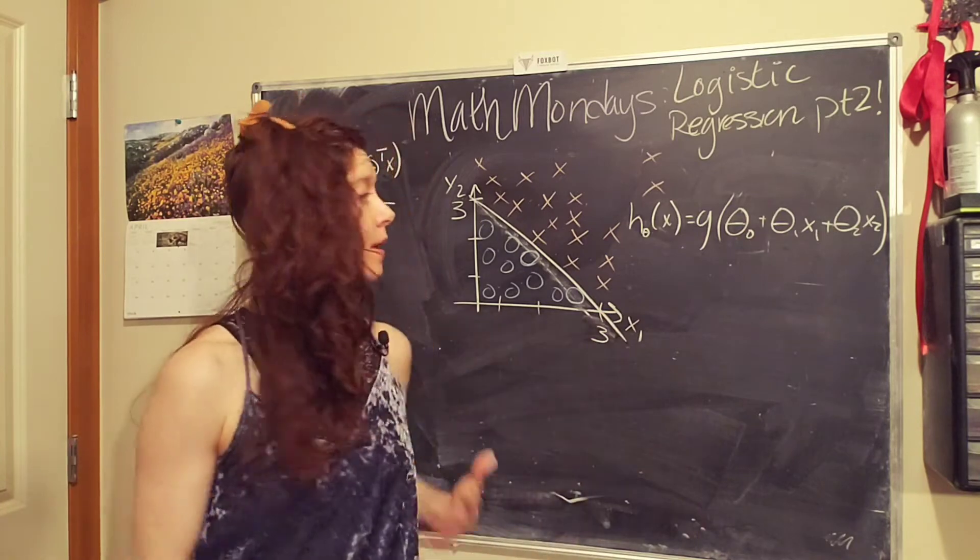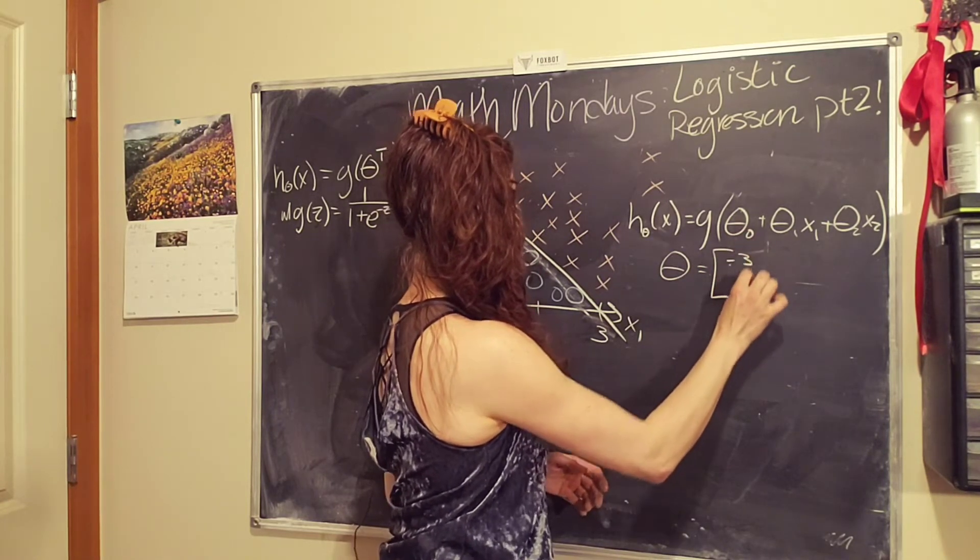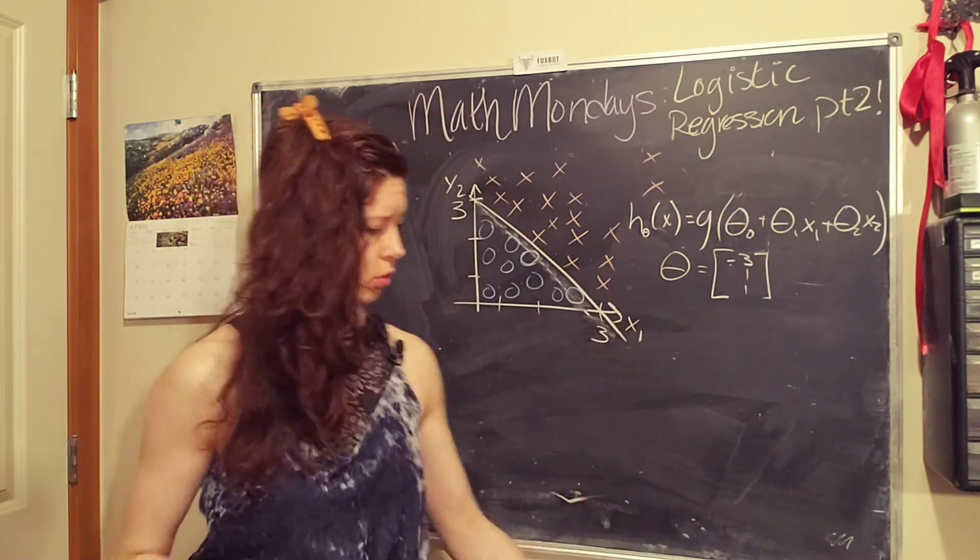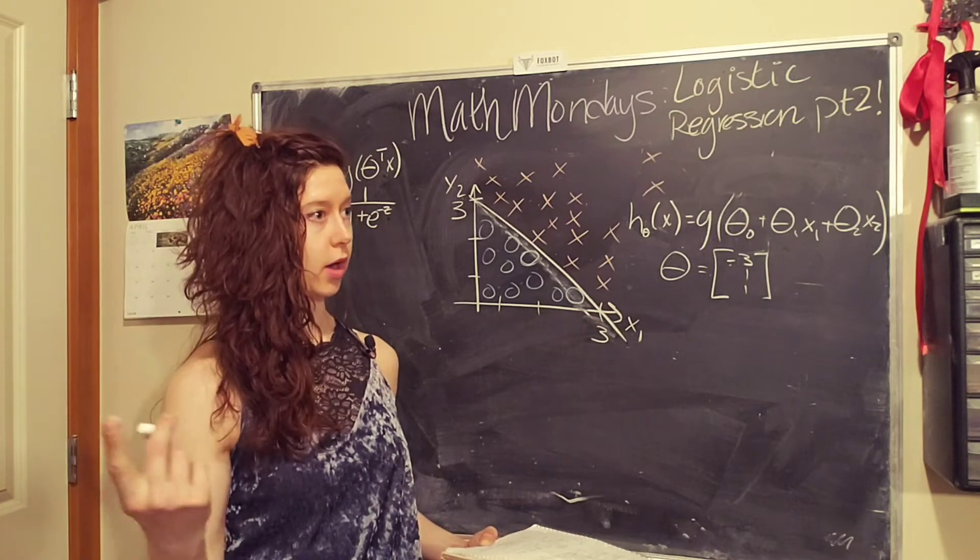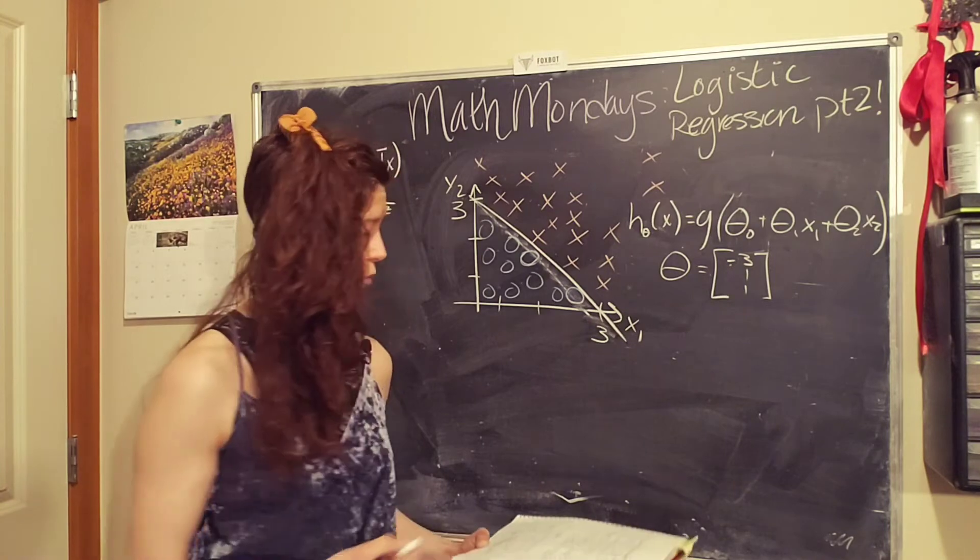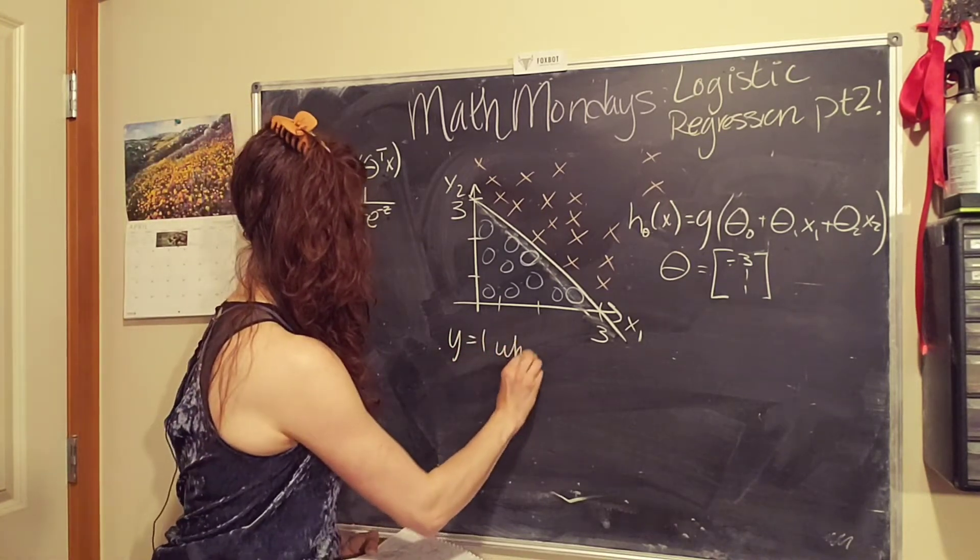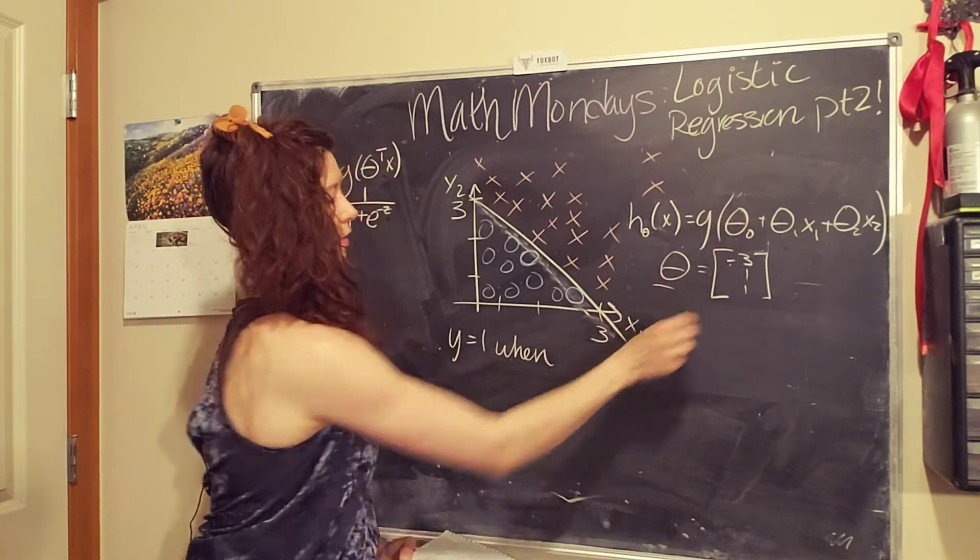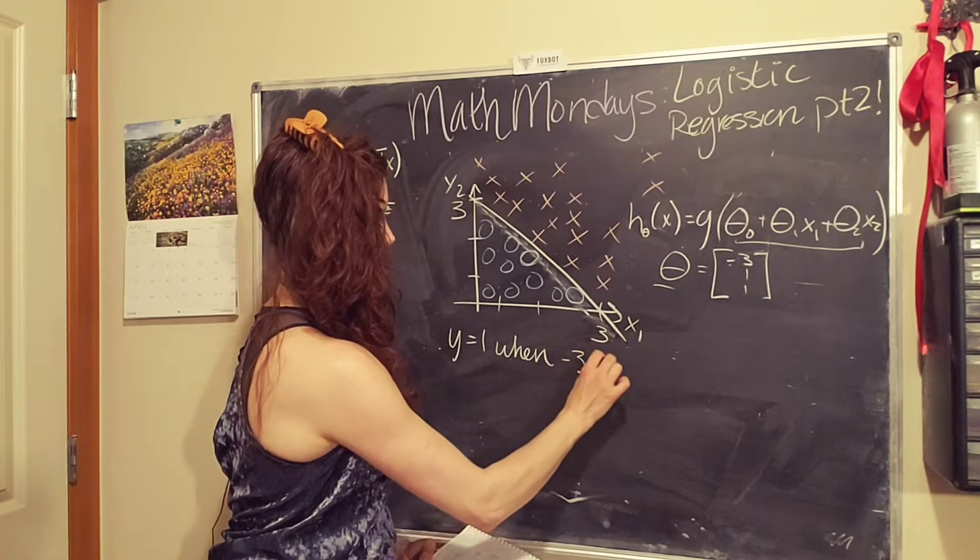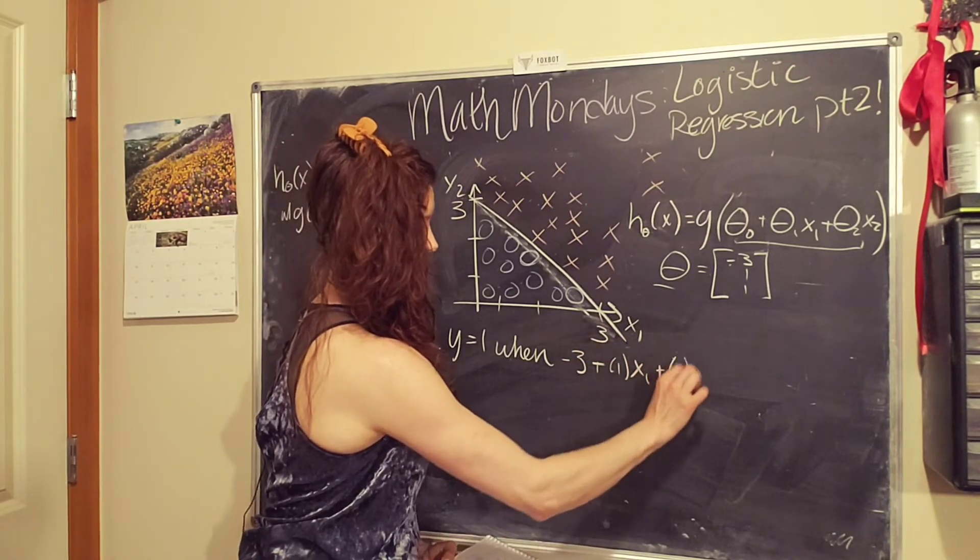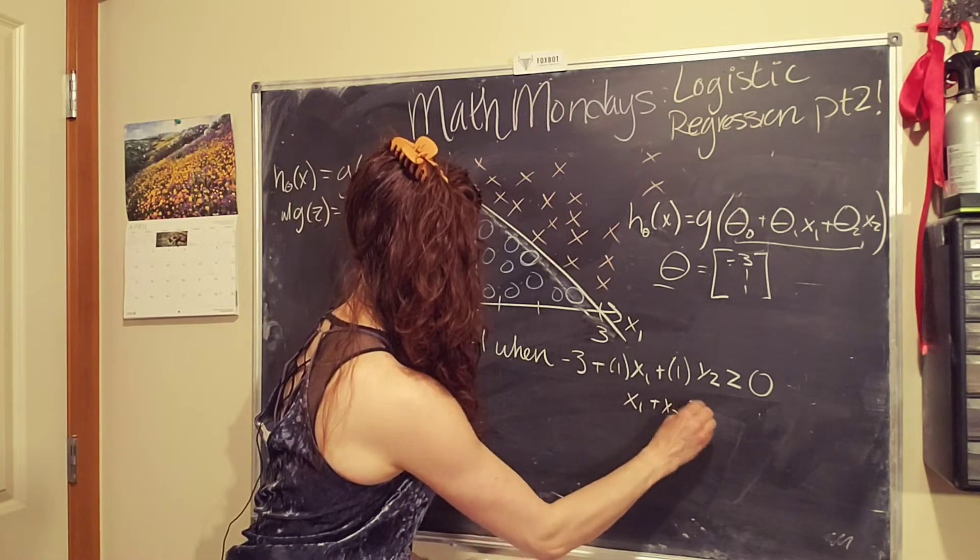So in this case, we have three parameters. And let's say we run our algorithm, and it spits out a parameter matrix of negative three, one, and one. And then we shove that back into our hypothesis. Well, what we did previously to figure out where our hypothesis function is going to be greater than or equal to 0.5, because that's our decision boundary. And so, basically, in other words, we're going to predict y equals one, when, and then we input these found values for our parameter matrix into this part. So when negative three plus one times x one plus one times x two is greater than or equal to zero.